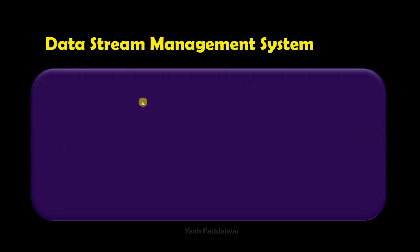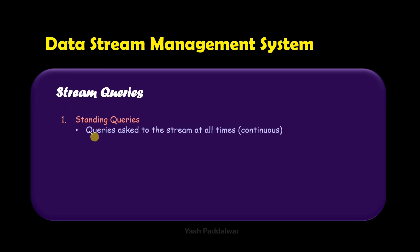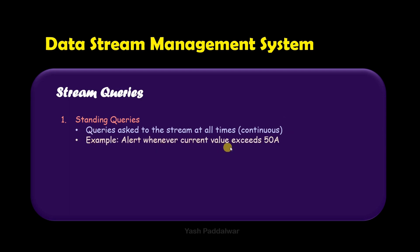Stream queries in data stream management system are of two types, and this topic is very important. The first type is standing queries — these are queries that are asked to the stream continuously at all times. A standing query is asked once and is applicable for the entire stream entering the stream processor, meaning a continuous output stream will be generated from this one single standing query.